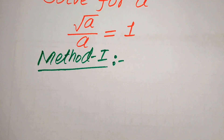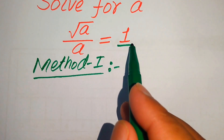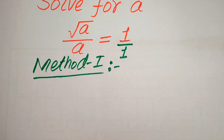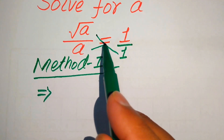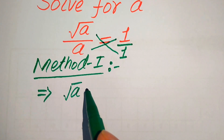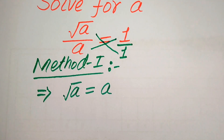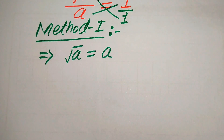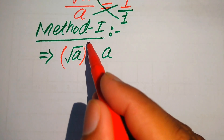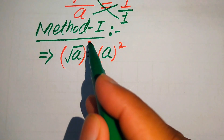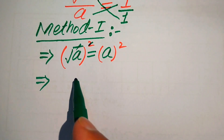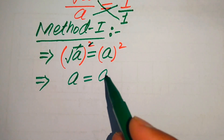In the first method, the denominator on the right hand side is 1, so we cross multiply the terms — we multiply 1 with this value and a with this value. It becomes: square root of a equals a. Because we are solving for the values of a, we square both sides, and the square root is eliminated, giving us a equals a squared.